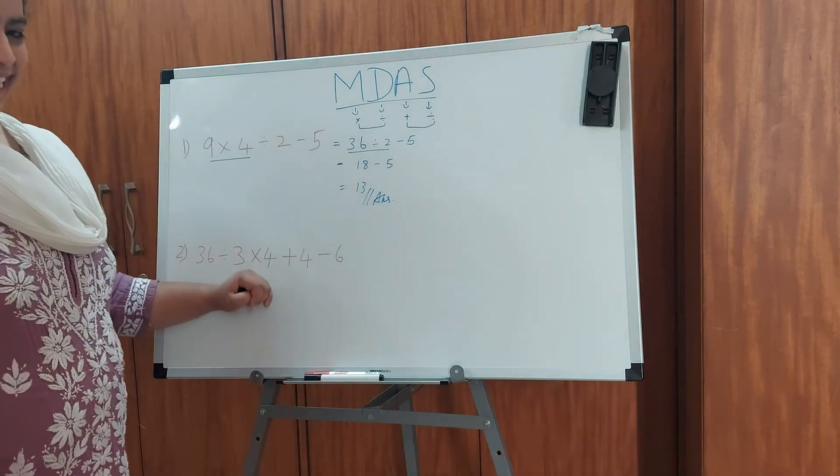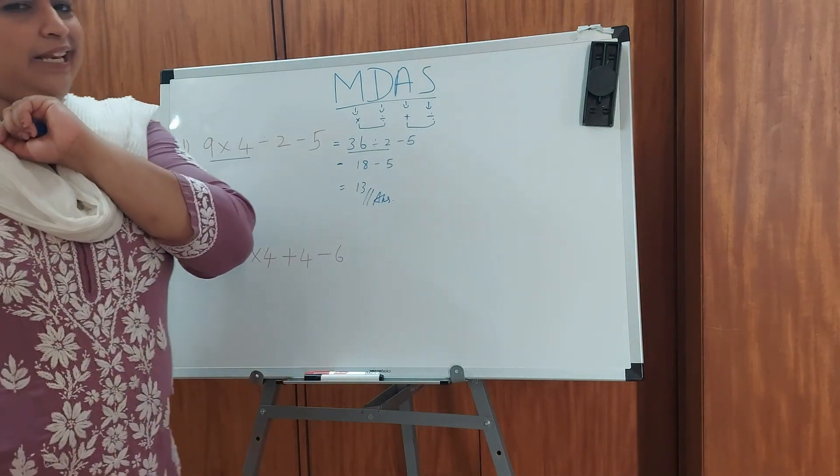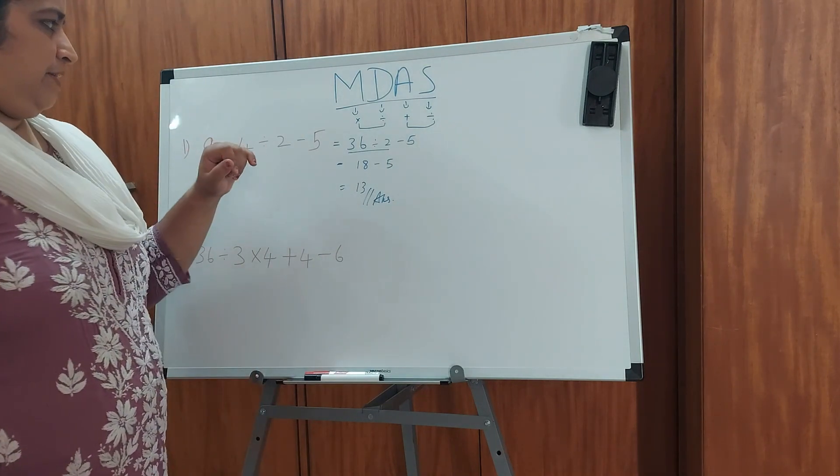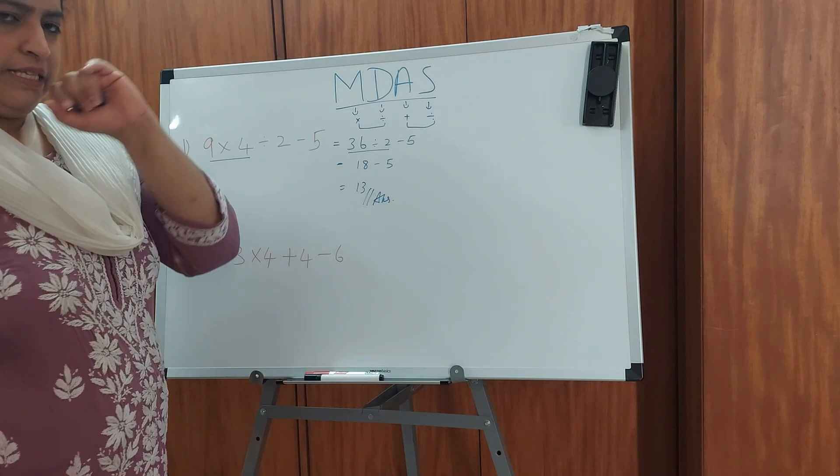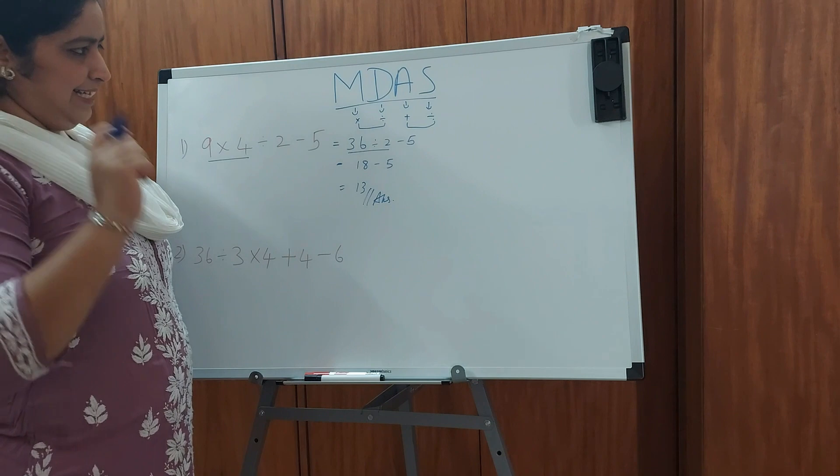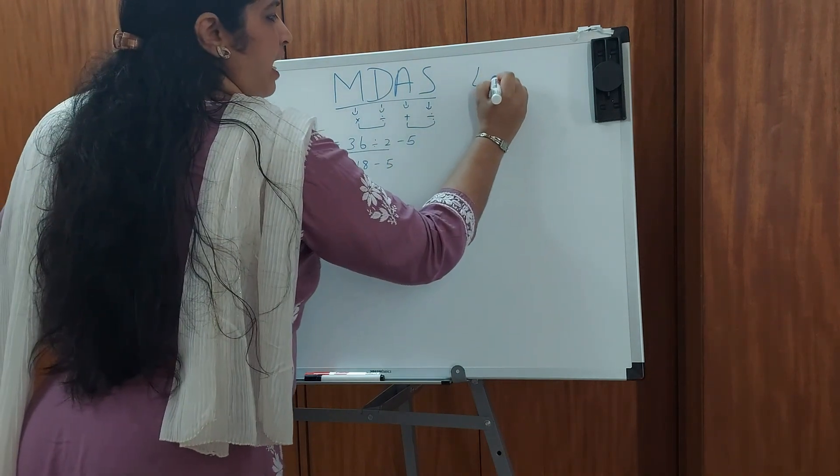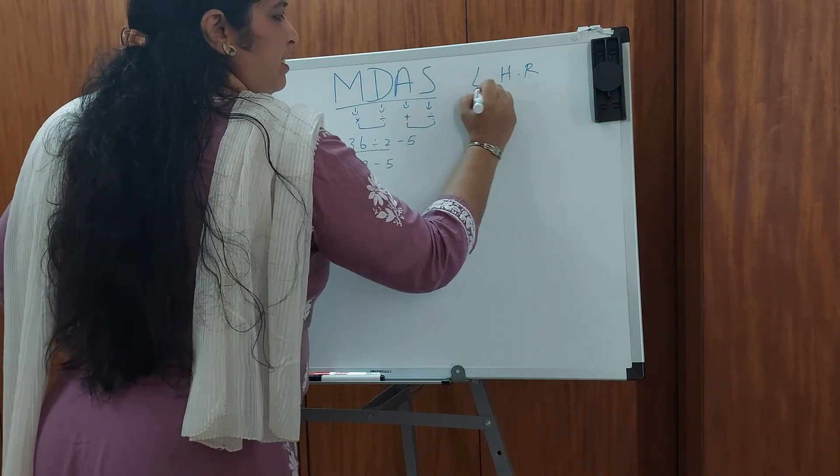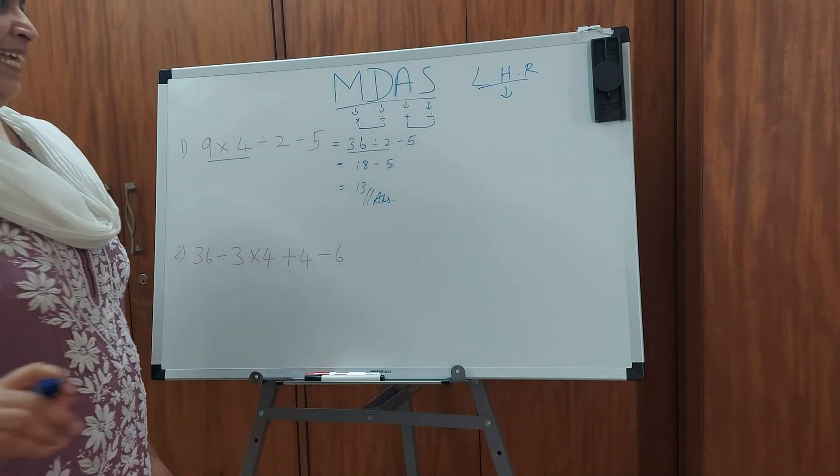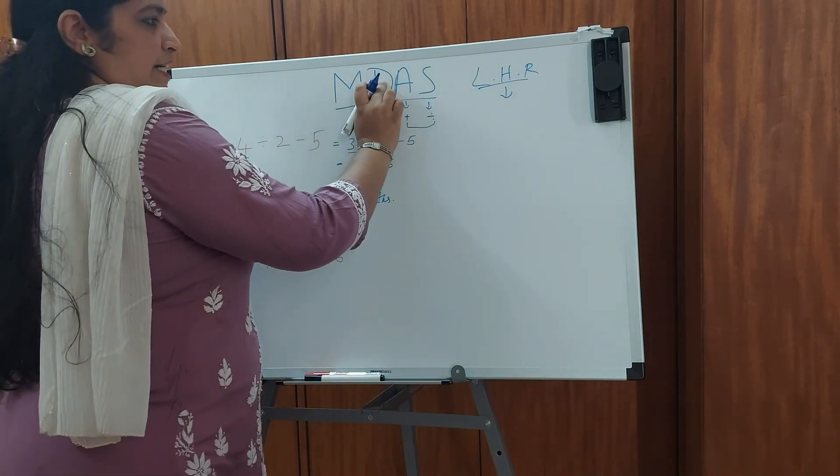Now let's see the second question. The second question is a little different from our first question. First question we had a direct question. That is we had multiplication, division and then subtraction which was pretty easy to do. Now we are going to learn a small trick in this which is called the left hand rule. So what is this left hand rule? Left hand rule is pretty easy in multiplication and division.